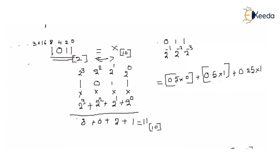Continuing: 0.25 × 1 = 0.25, plus 2^(−3) = 0.125; 0.125 × 1 = 0.125. So for 0.011, the weights after the binary point give: 0.5 for position −1, 0.25 for position −2, and 0.125 for position −3.